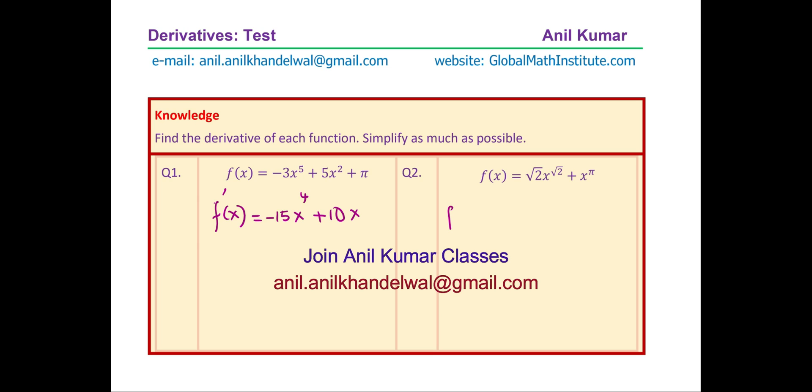Now, the second one is f prime x equals 2. We will multiply square root 2 with square root 2. You will get 2x to the power of square root 2 and then minus 1, and here we have pi. So pi is a constant. So we can write this as the constant pi times x to the power of pi minus 1.